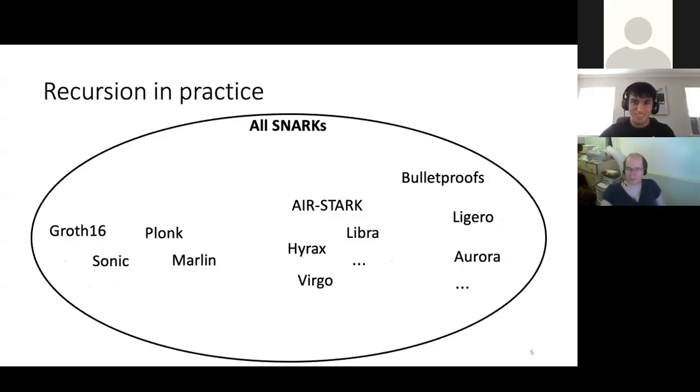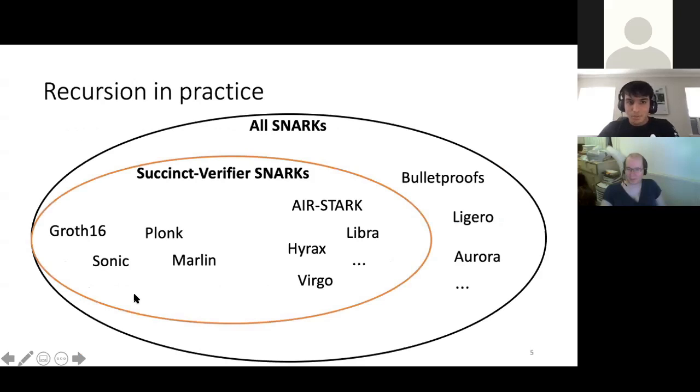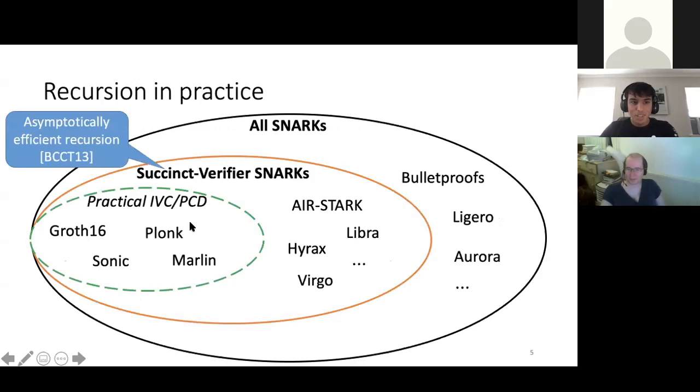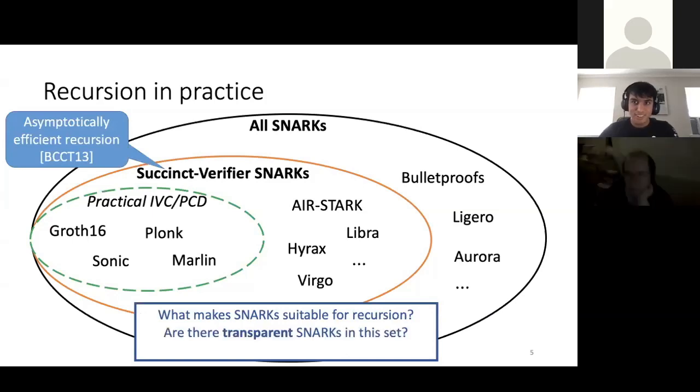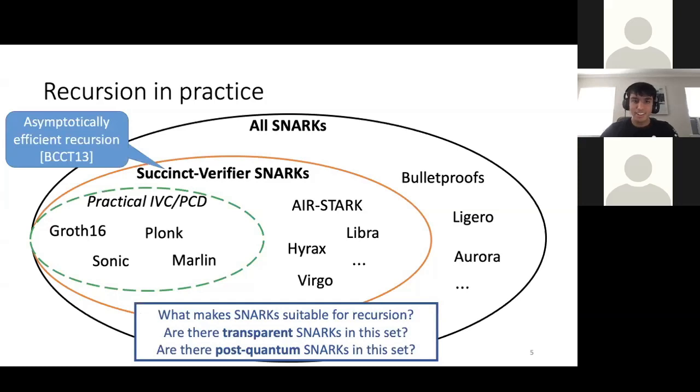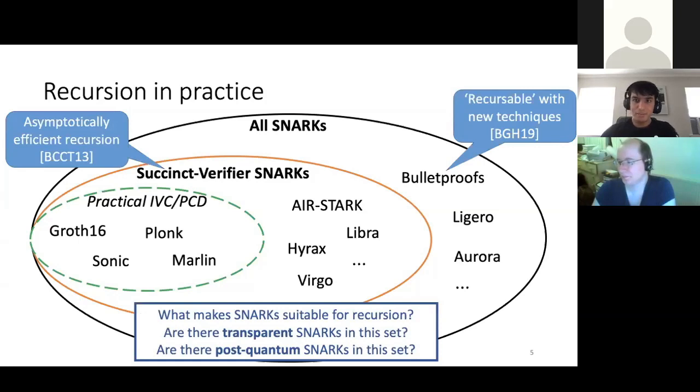So let's move on to recursion in practice. Here's a set of many snarks. And here's the succinct verifier snarks. So from theory, we have that asymptotically, all of these should recurse. However, empirically in practice, we haven't seen this. Empirically, we've only been able to get practical IVC and PCD from Groth-16, Plonk, Sonic, and Marlin. This is a very restricted set. These are all trusted setup, pairing-based snarks. So what is it that makes snarks suitable for recursion? Are there transparent snarks in the set? Are there post-quantum ones in the set? Also, I want to add, as a slight note, bulletproofs are now recursable with new techniques from Halo. But these recurse in a different sense than sort of what I showed in slide 2. They still will achieve incrementally verifiable computation, but it would be a different technique. I can elaborate more on this in the questions later.